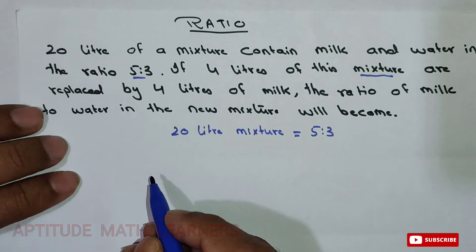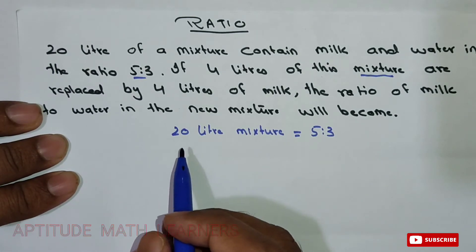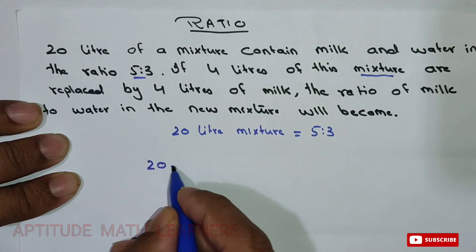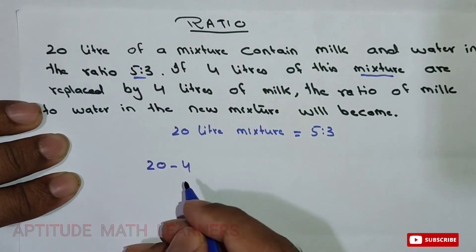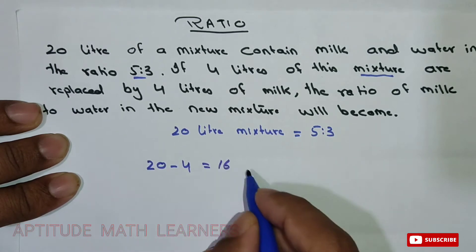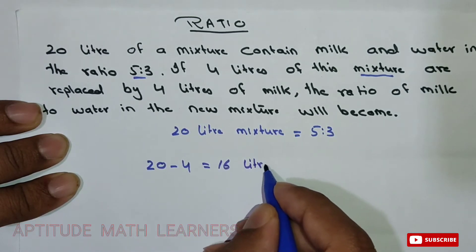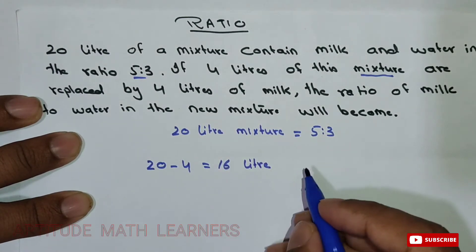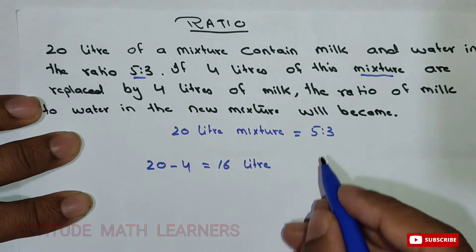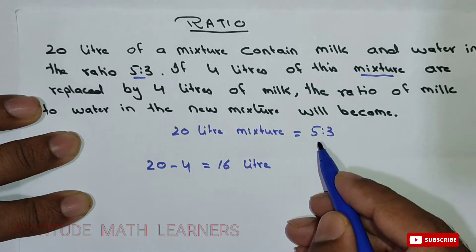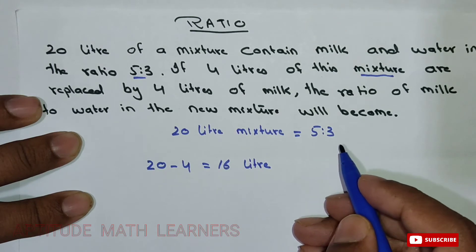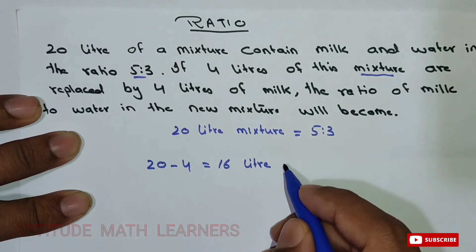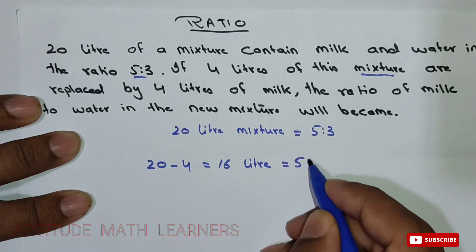So 20 minus 4 becomes 16 litres remaining from the whole mixture. Since the original 20-litre mixture was in the ratio 5:3, taking out 4 litres from the whole mixture means the remaining 16 litres are also in the ratio 5:3.